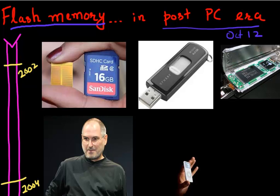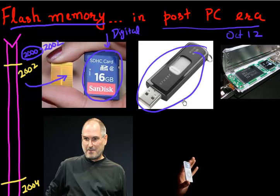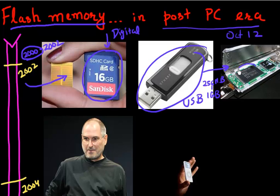Some of the early products that used flash memory were memory cards used primarily in digital cameras, which were really starting to take off around 2000 to 2002. The other thing using flash at that time were USB drives, which people were using to store their files and conveniently carry with them, ranging in capacity anywhere from 256 MB up to one gigabyte. If you opened one of these early ones up, they consisted of a flash memory chip and a controller — only a couple of chips inside these drives.